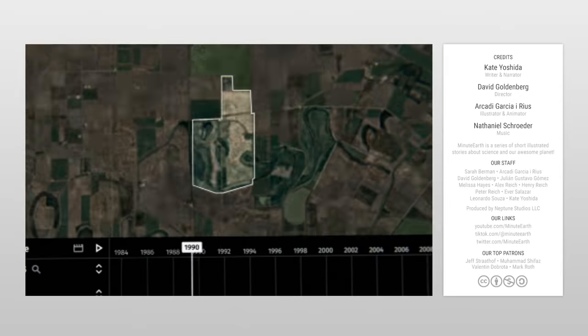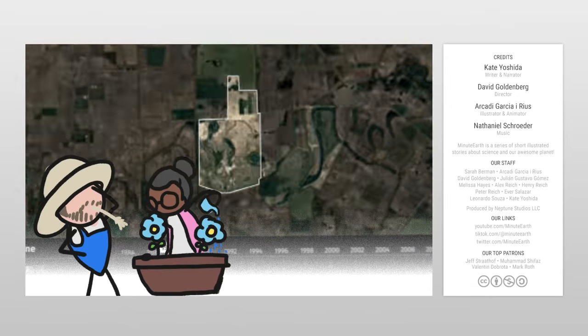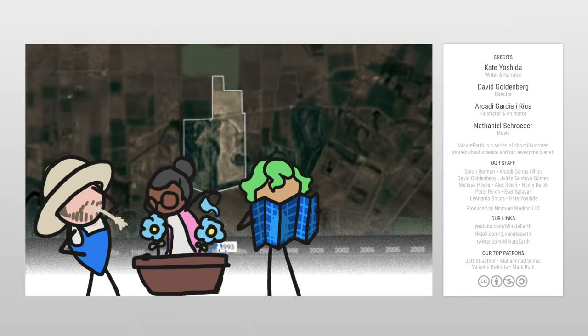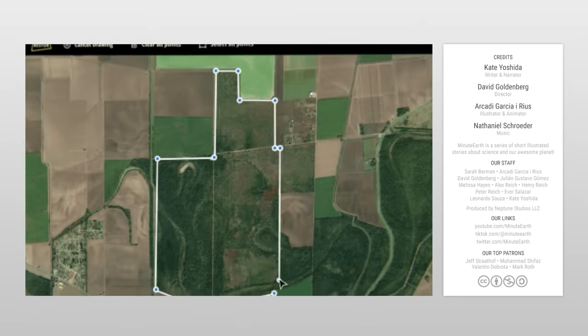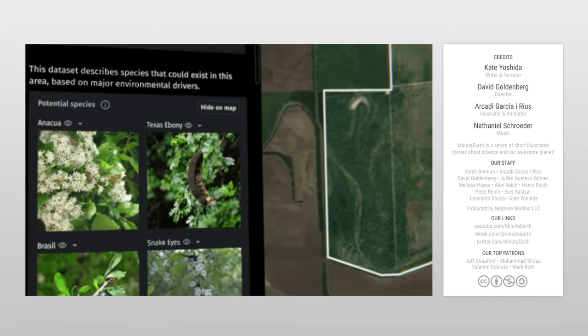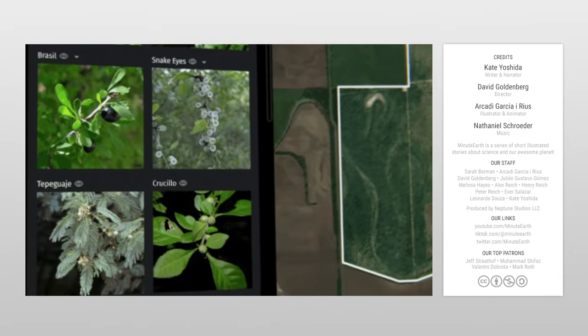All of us have an impact on the land, whether we're farmers or windowsill gardeners, run community forestry projects, or manage pension funds with global investments. And the Crowther Lab believes that with access to the right tools, we can all contribute to the sustainable use of the land we depend on.